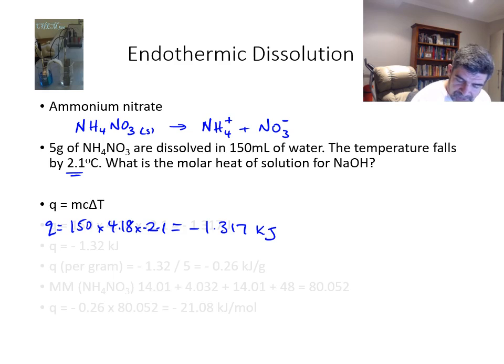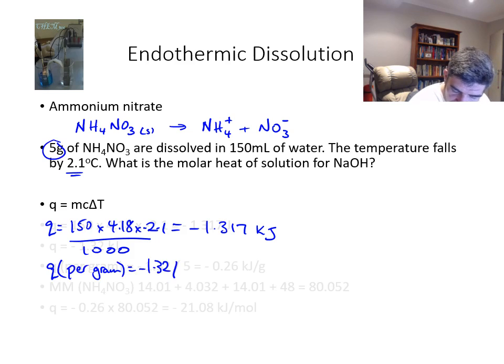So therefore this value is going to be minus 1.317 kilojoules. And of course, I've divided this whole thing by 1000 in order to get that. So I can now work out my energy per gram by doing minus 1.32 divided by the 5 grams I have this time to give me a value of minus 0.26 kilojoules per gram.